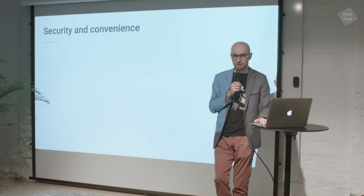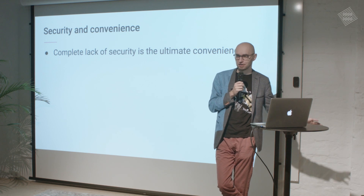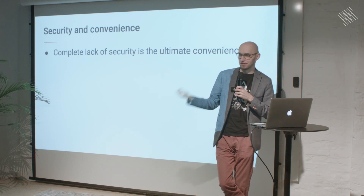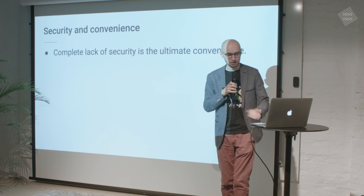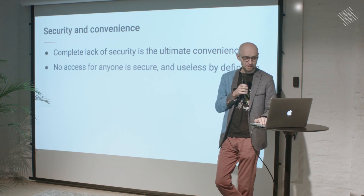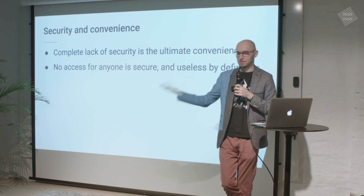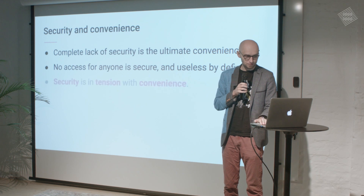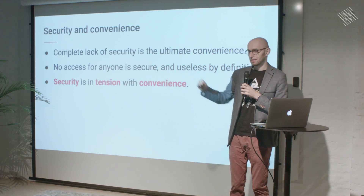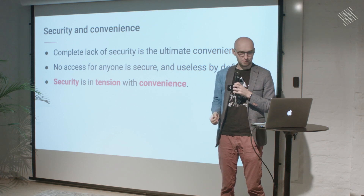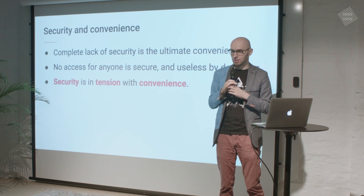Let's talk about security and convenience. Philosophically, complete lack of security is the ultimate convenience — if there's no security at all, anyone can do anything, but if that thing is your money, you probably don't want that. On the other end, if no one can access the money, that's ultimate security but it's useless. The main point is that security is ultimately in tension with convenience — the more security you want, the more inconvenience you have to accept. But if you want convenience, you may have to make some compromise on security.